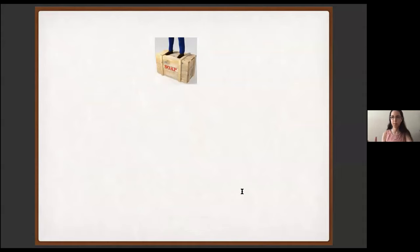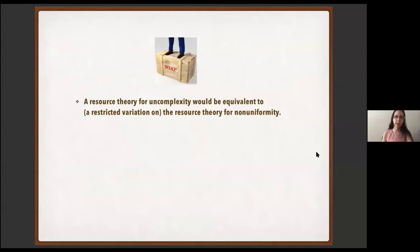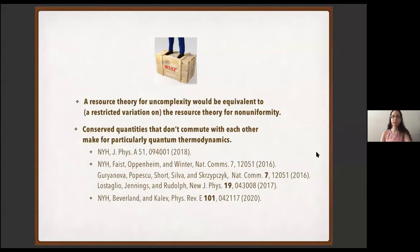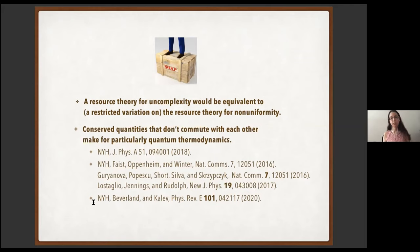Now for some provocative theses. Suppose we're looking for a resource theory of uncomplexity — I conjecture it would be equivalent to a restricted version of the resource theory of non-uniformity, with restrictions on the dimensionality of states that can be tensored on. I'm also interested in conserved quantities exchanged between system and bath that don't commute with each other, enabling truly quantum thermodynamics. This idea has been propagating across quantum information theoretic thermodynamics and recently into AMO and condensed matter physics, but I'm interested in its implications for high energy physics, especially regarding conserved charges that don't commute.